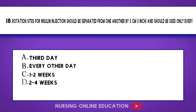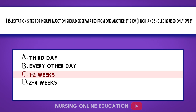Question 18. Rotation sites for insulin injection should be separated from one another by 5 centimeters (1 inch) and should be used only every: A. Third day. B. Every other day. C. 1–2 weeks. D. 2–4 weeks. The answer is option C: 1–2 weeks.